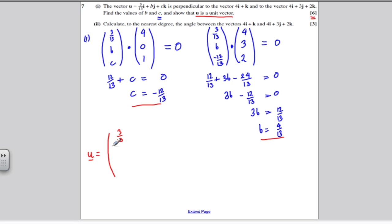The vector U is the following. It is 3/13 in the i direction, it is 4/13 in the j direction, and it's minus 12/13 in the k direction. For something to be a unit vector, its magnitude must be 1. So let's work out the magnitude of U.